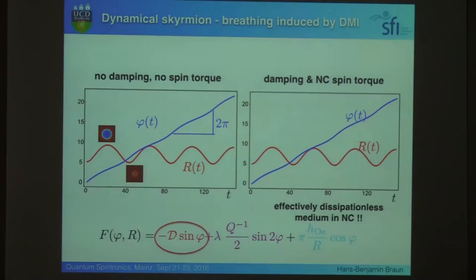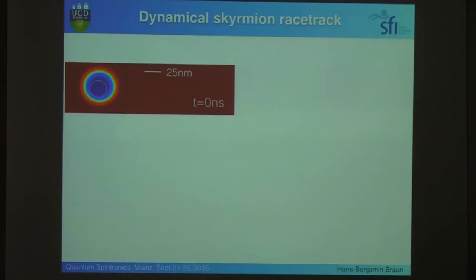Now, so, you have a dissipationless medium in a nano contact, and what you also can do, you can generate skyrmions underneath a nano contact and shuttle them through a DMI-free material. No need for DMI, as long as it is dynamic.